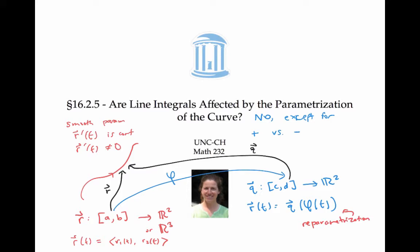We will be working with smooth reparameterizations — that is, φ′(t) is continuous and is never equal to zero. I want to make an important distinction between two types of reparameterizations. We can have a parameterization of a curve and a reparameterization that both go in the same direction. They both start at the same initial point, which I could call r(a) or q(c), and they both end at the same point, which I could call r(b) or q(d).